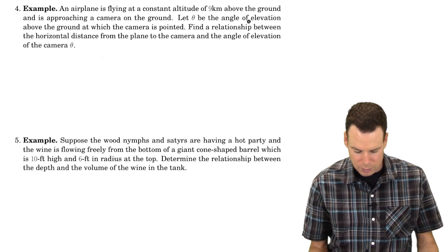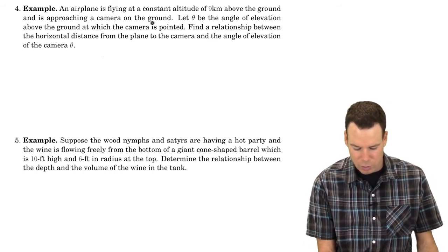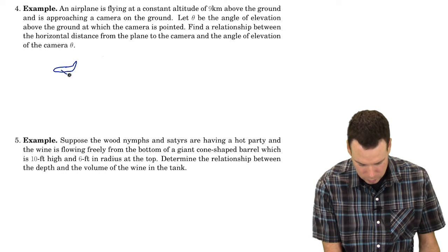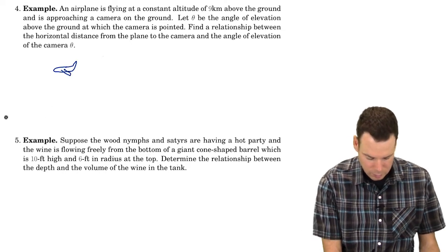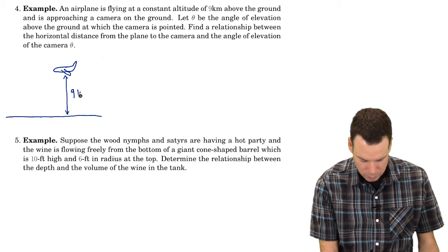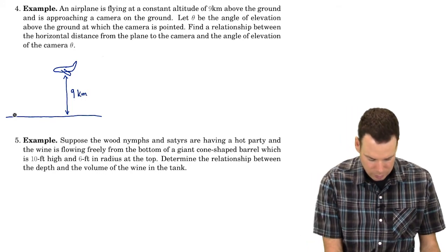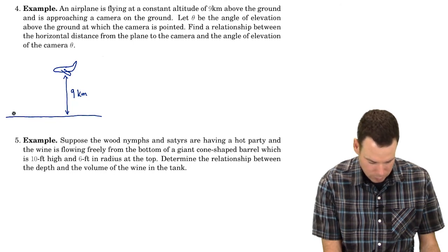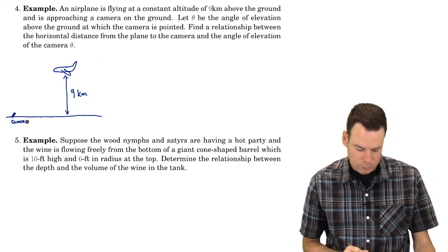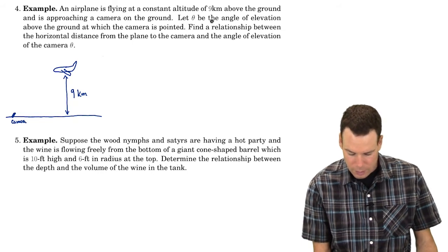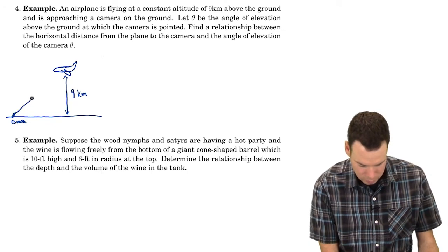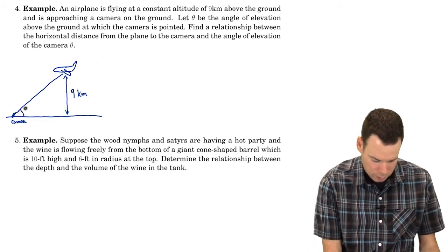Next example: an airplane is flying at a constant altitude of 9 km above the ground and is approaching a camera on the ground. There's the airplane flying at a constant altitude — this is 9 km — and there's the camera on the ground. Let theta be the angle of elevation above the ground at which the camera is pointed at the plane. So theta is our angle of elevation.